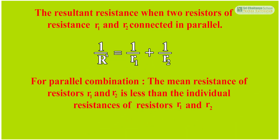The resultant resistance when two resistors of resistance R1 and R2 are connected in parallel: 1 by R' is equal to 1 by R1 plus 1 by R2. For parallel combination, the resultant resistance of resistors R1 and R2 is less than the individual resistances of R1 and R2.